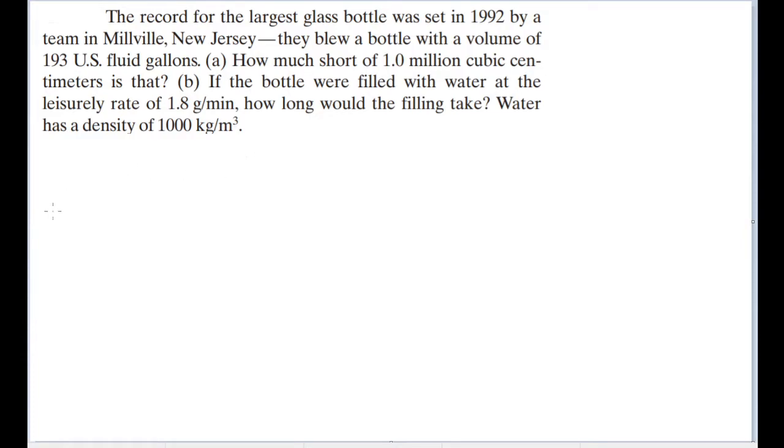Alright, so part A to this should be simple enough because it's a simple conversion type problem. So we have a bottle of 193 gallons and we want to convert that into cubic meters or cubic centimeters so that we can compare it to this value here of 1.0 million. So let's just do a conversion here. So we have 193 gallons, and this is going to be equal to a conversion factor of 193 gal times whatever the conversion factor is.